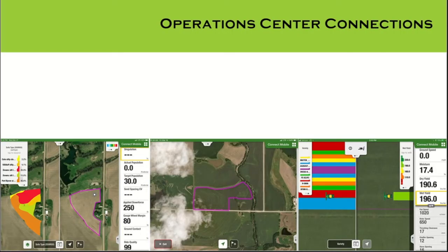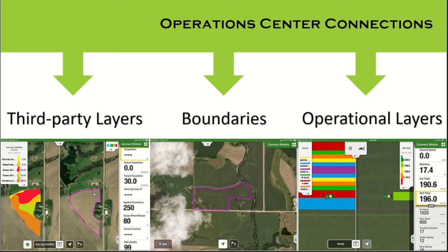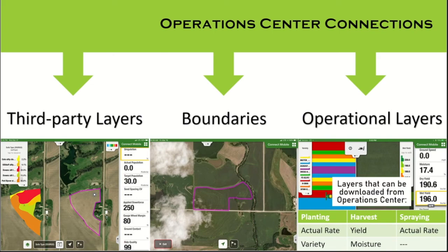Connect Mobile also has connections to the operations center. If third-party layers are available in Field Analyzer, they can also be seen in Connect Mobile. Your active boundaries are shown in Connect Mobile for a better understanding of work progress and to ensure the entire field gets covered. Previously documented operational layers are also viewable in Connect Mobile while performing the current operation, overlaid with what's currently being completed in the field. You can also download actual rate and variety for planting layers from the operations center.